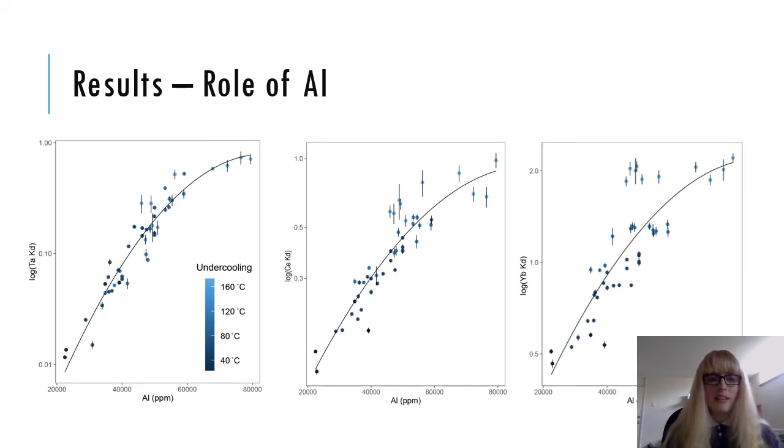So it's clear that aluminium plays a key role in the distribution of rare earth elements and high field strength elements. So here are some plots with aluminium and the partitioning coefficient of tantalum and the rare earth elements. We see that as aluminium increases, tantalum partition coefficients increase, which highlights the dependence of the presence of aluminium and the role of charge balancing substitutions. The light rare earth elements behave quite similarly, but the heavy rare earth partition coefficients, such as ytterbium on the right, appear to stop increasing with aluminium at very high undercooling conditions.